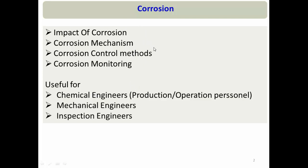Similarly, for mechanical engineers, understanding corrosion mechanism is very important. They need to understand why for some materials we go for post-weld heat treatment (PWHT), why for some materials we use TIG welding versus arc welding, and why we can't use certain joint types like butt joints or lap joints.